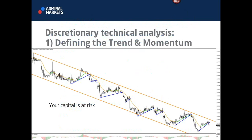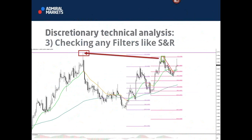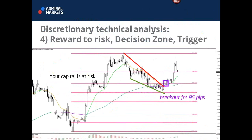In this strategy session, I'll be diving into patterns, fibs, oscillators, and fractals — combining them to make discretionary technical analysis. The four steps are: one, define the trend of momentum; two, look for opportunities within that trend or against it depending on what the market structure is saying — for instance, Fibonacci and patterns could be opportunities to trade a dip in a trend; three, look at filters that could be stopping a good trade from developing; and four, if all three steps are green light, look at where and how to trade it and what the reward-to-risk is.